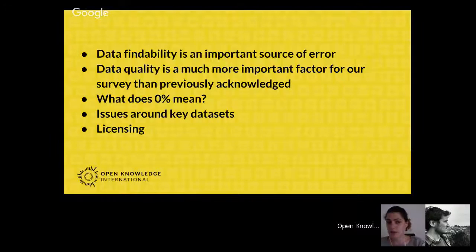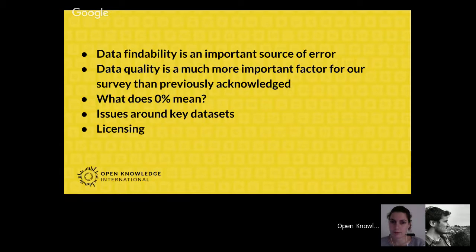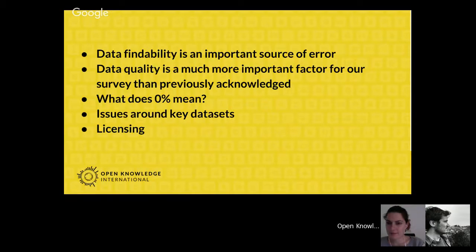We want to open the floor for questions. If you want to use the YouTube live chat next to the video window, or if you want to use Twitter, you can use the GODI 16 hashtag and tag OKFN. We have three questions so far from Martin. The question was: can the ranking places change after the public dialogue session? That all depends on how the dialogue develops. I can totally see that if we spot evident mistakes — like finding spending data that is actually budget data — then we would obviously have to correct that. And if we can't find spending data that would replace the budget data, we would obviously change the score, and in the end that would also affect the ranking.